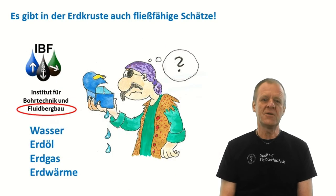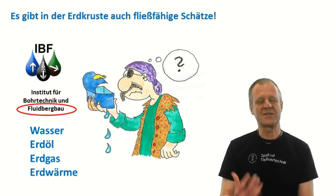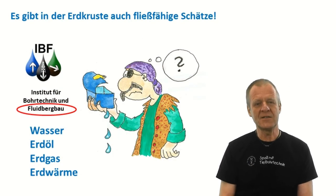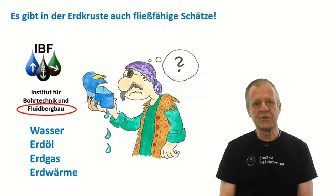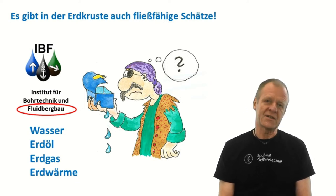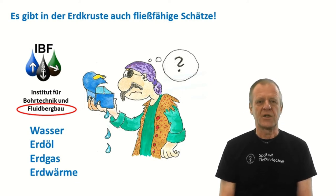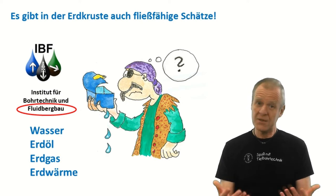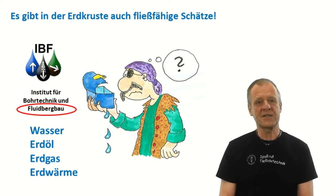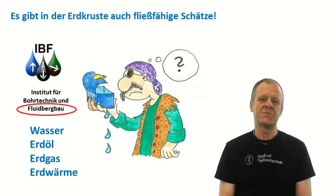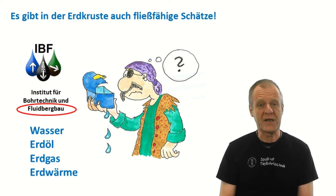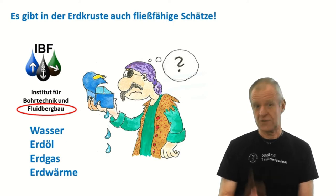But there are also many fluid treasures in the crust of the Earth that we need for our living. For example, this includes water, crude oil, natural gas, and even in the broader sense, geothermal heat. All these raw materials have something in common — they are able to flow in the underground. Therefore, we call our efforts in mining these fluid treasures on the Earth, fluid mining. This is what we deal with in our institute here.